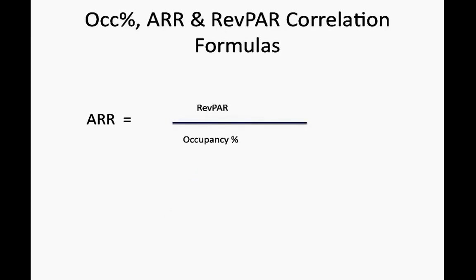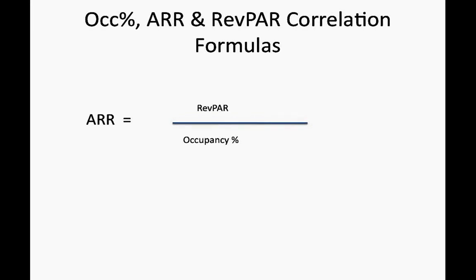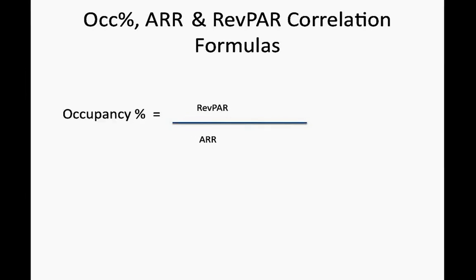If you know RevPAR and occupancy percentage, you can calculate your ARR by dividing RevPAR by occupancy percentage. So ARR is equal to RevPAR divided by occupancy percentage. Obviously, occupancy percentage is going to be RevPAR divided by ARR. Simple.